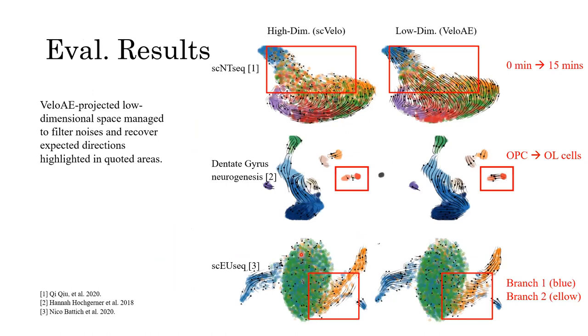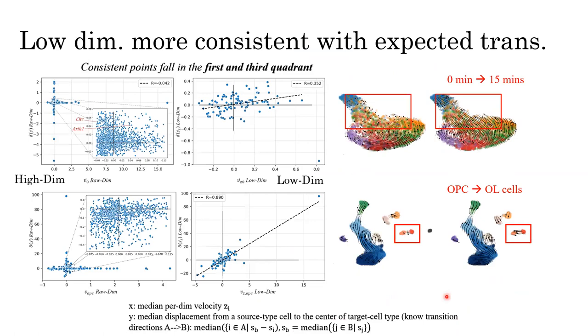To evaluate our framework, we tested it on three different datasets with partially known or fully known transition directions. And the results show that in the low dimensional space, our method managed to filter the noises and recover the expected directions as is shown in the quoted areas.